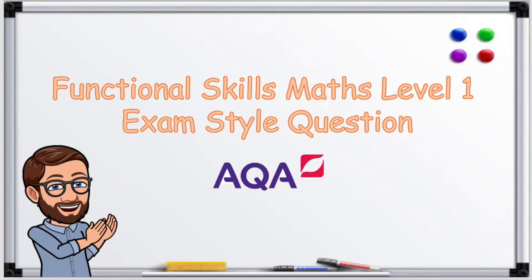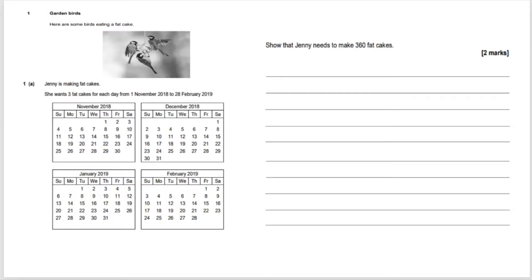Hi, I'm Mr. Maths. Today we are looking at a functional skills level 1 question from an AQA non-calculator paper. This question is a two mark question called Garden Birds. Here are some birds eating a fat cake. Jenny is making fat cakes.